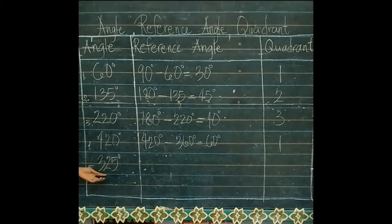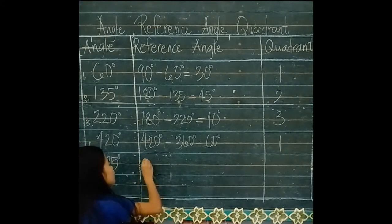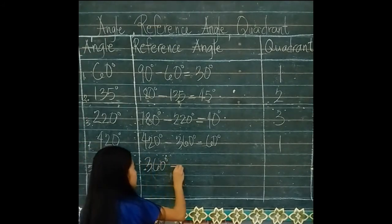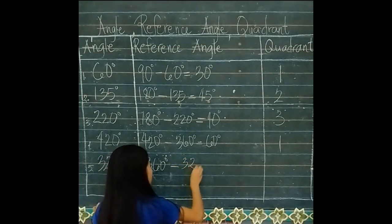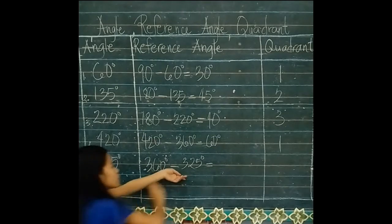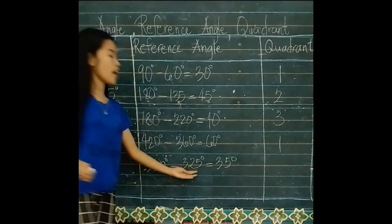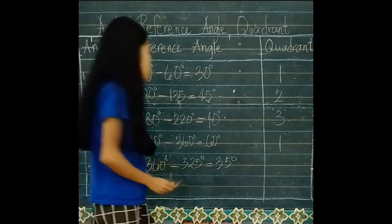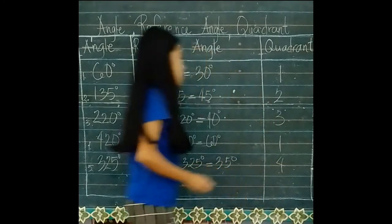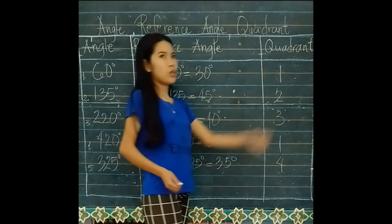For 325 degrees: 360 degrees minus 325 degrees is equal to 35 degrees, and 325 degrees is in Quadrant 4. So this is how to solve and get the reference angle and exact quadrant.